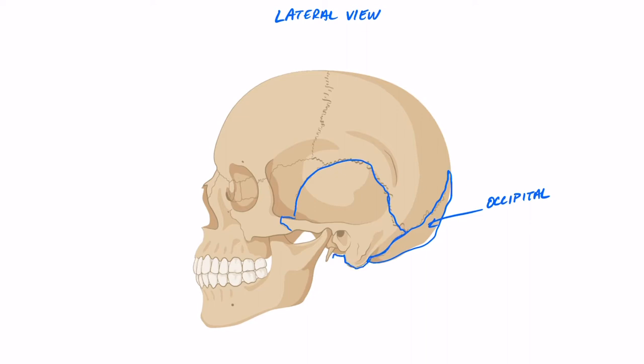From this lateral view we can see the temporal bone really nicely, and that's a paired bone, here we're looking at the left. Superior to the temporal bone we have the parietal bone, parietal in Latin referring to the wall, and this forms a major portion of the lateral wall of the cranial vault, and anterior to the parietals we've got the frontal, we've got the sphenoid hidden a little bit inside.